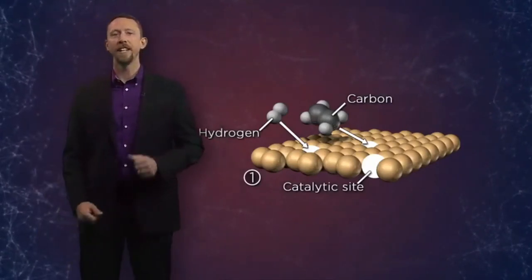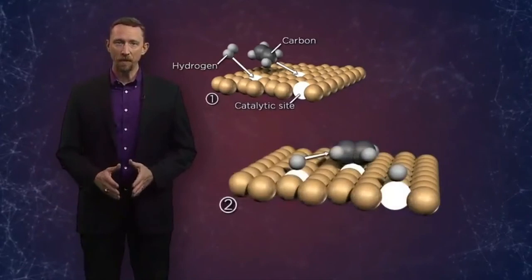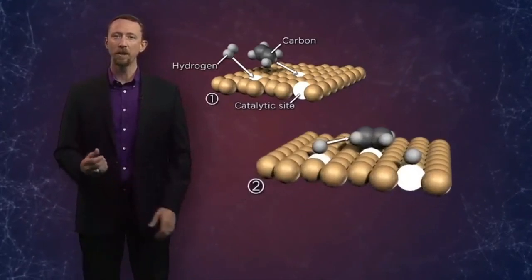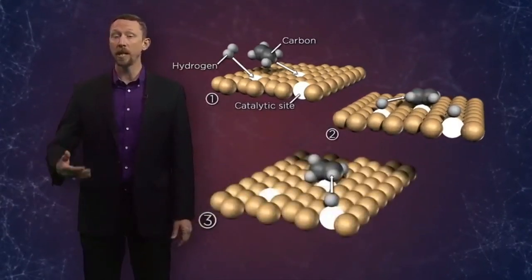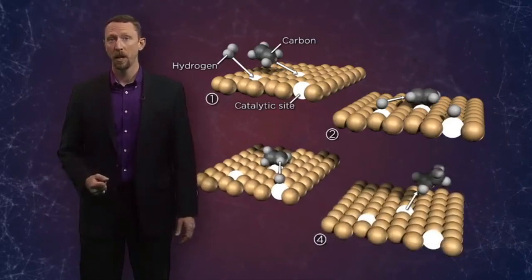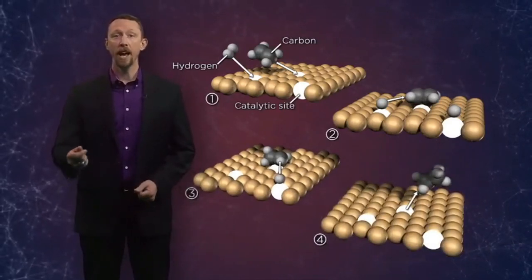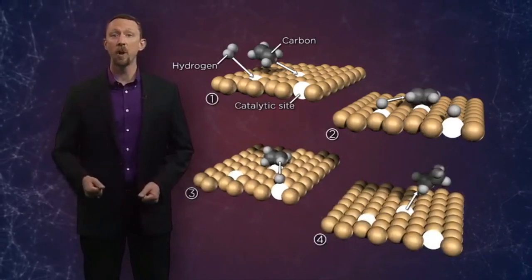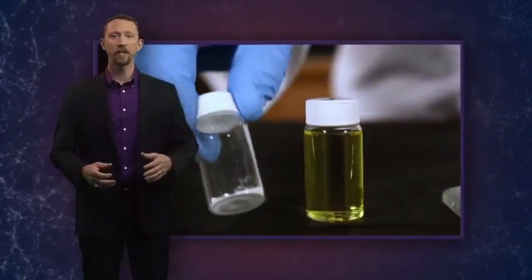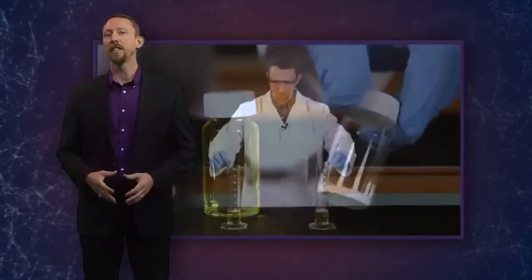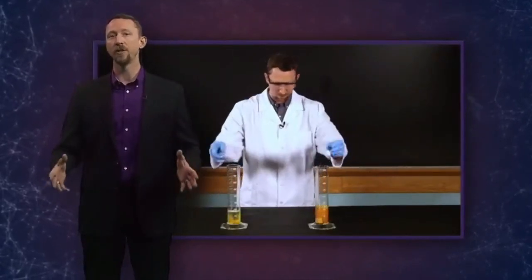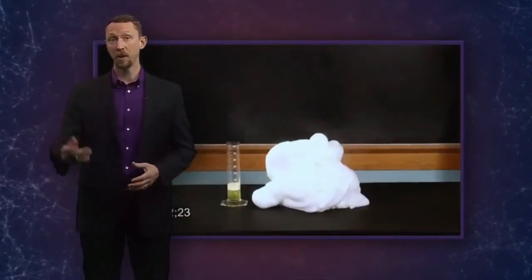Finally, we discussed catalysis, the process by which the presence of a chemical speeds a reaction without actually consuming that chemical. We saw how a wide array of catalysts exist, some heterogeneous, like Berzelius' noble metals, and others homogeneous, like the iodide that so efficiently speeds the decomposition of hydrogen peroxide and enzymes in your own bloodstream.